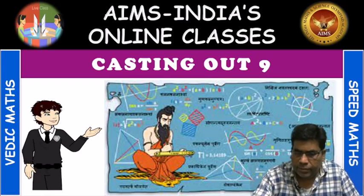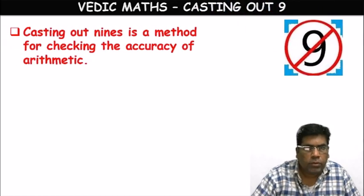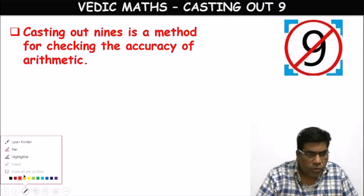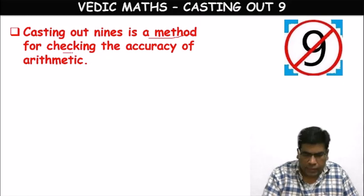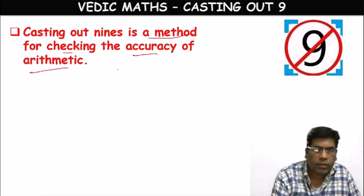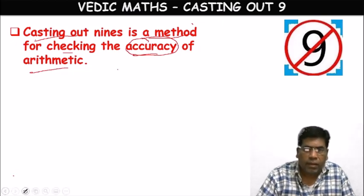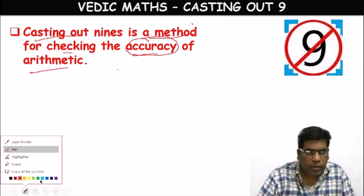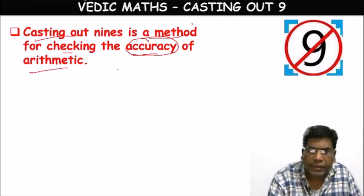Let's see the detail theorem. This Casting Out Nines is a method for checking the accuracy of arithmetic. Accuracy means whether it is correct or not — whether it is 100% correct or not. The checking technique is called accuracy.